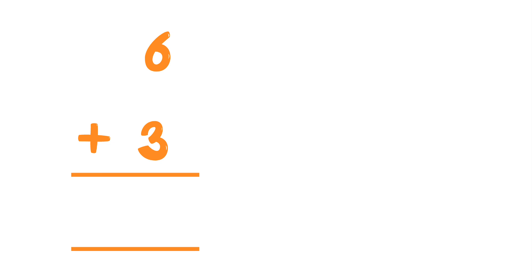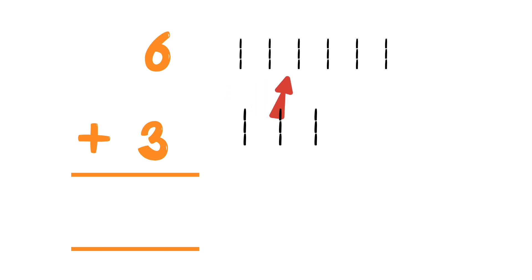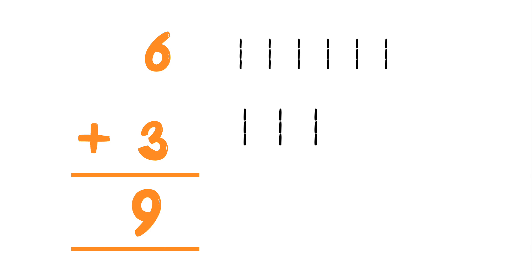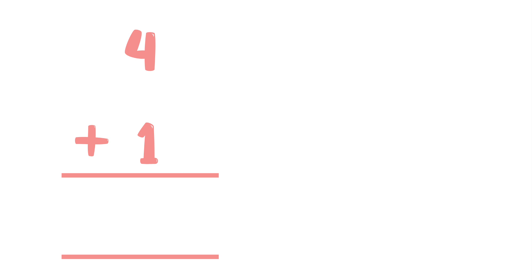Let us learn to do this without objects. Six plus three equals what? For this we have to draw lines. Count how many lines there are: one, two, three, four, five, six — yes, we have six lines. Now draw some more lines. How many more? One, two, three. Now count the total: one, two, three, four, five, six, seven, eight, nine — yes, nine lines total. So six plus three equals nine.